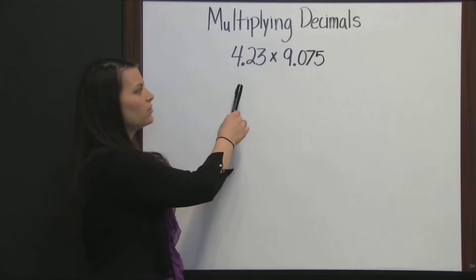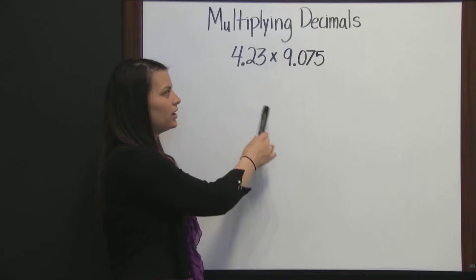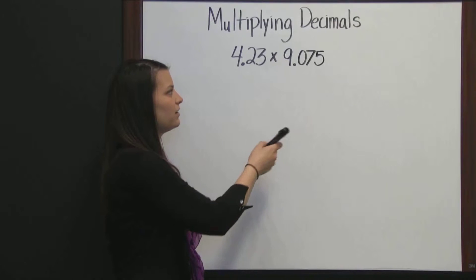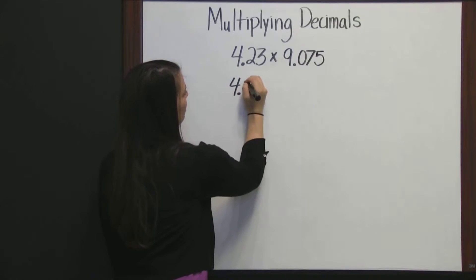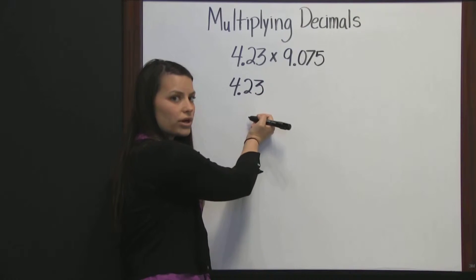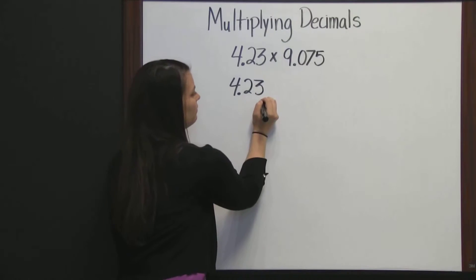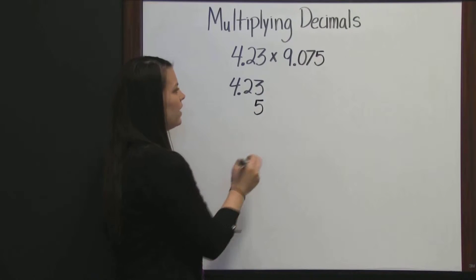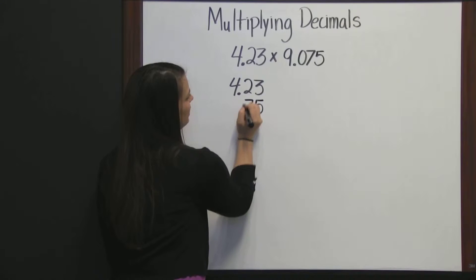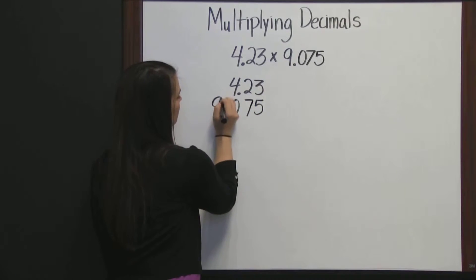So, if we were multiplying 4.23 times 9.075, we'd want to line up our last digits. 3 is the last digit in 4.23, and 5 is the last digit in 9.075. There's my 7, my 0, my decimal, and 9.